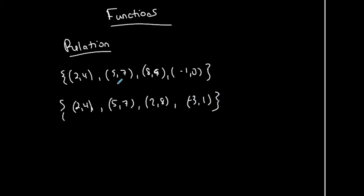Both of them have four points within the relation, so these are both relations — they're relationships between x and y, where for each x there is a paired y. Now, the difference is that in the first relation, for every x there exists only one y. But in the second relation, there's a repeated x value with two different y values — one input corresponding to two different outputs. That goes against the definition of a function.